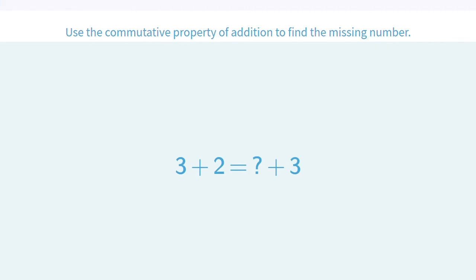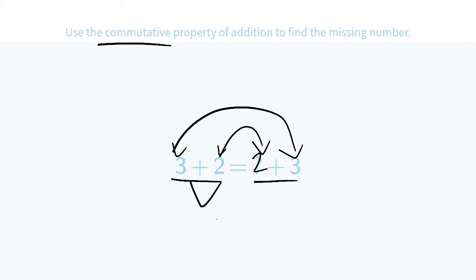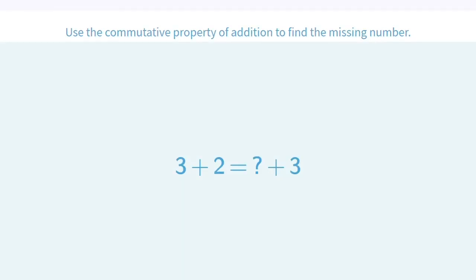Three plus two equals blank plus three. Using that commutative property again. Three plus two equals blank plus three. Threes. And what should go here? Two. Because both sides equal five. So in that missing spot, we want a two. Excellent job.